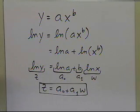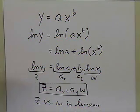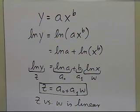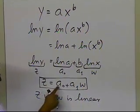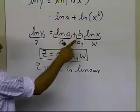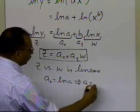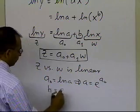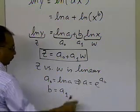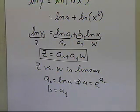What we see here is that z versus w is now linear — the relationship between z and w is a straight line, with a0 as the intercept and a1 as the slope. Since z versus w is linear, we can use the linear regression formulas to calculate a0 and a1, then backtrack to find a and b: a0 = log(a), so a = e^(a0), and b = a1.